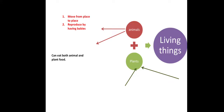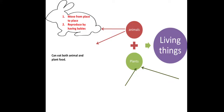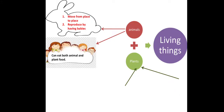How are they different? Animals can move from one place to another in search of their basic needs like food, water, and shelter. Animals produce by having babies. And some animals can eat both animal meat and plant food. So animals are different in their own ways.